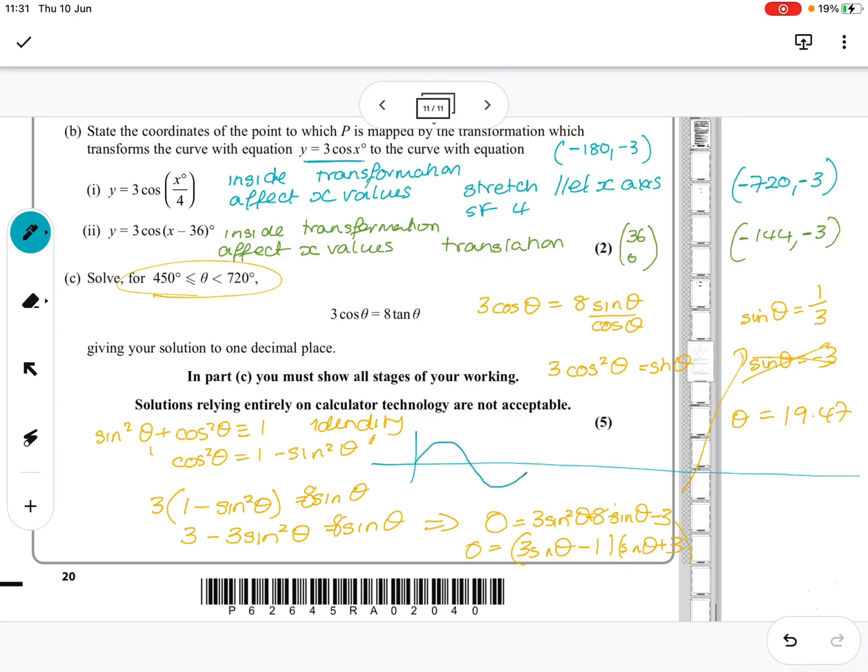We're going to go here. 360, 720. We had the first answer. It was this one at 19.5. So it's that one, that one, and that one. Between 450, which is here and there, this is the only answer. So that would be 360 plus 180. This is 540. So it's 540 minus 19.5, which gives me 520.5. And that was the only answer they're looking for.